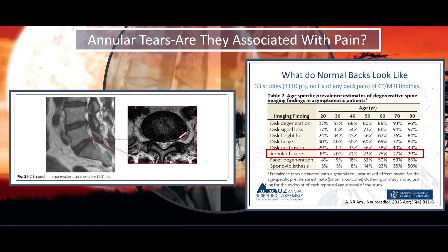On the left is a representation of the annular tear, and once again you can see the little bright area. Sometimes these are not identified unless the quality of the MRI is excellent — there can be a big difference in quality between different MRI scans, so to see this the quality has to be excellent. On the right is a chart from a study combining 33 studies and over 3,000 patients. At annular fissure or annular tear, they're seen in 19% of asymptomatic 20-year-olds, 20% of asymptomatic 30-year-olds, and so on, up to 29% of asymptomatic 80-year-olds.